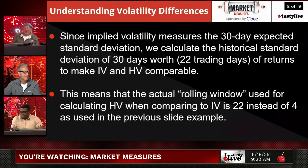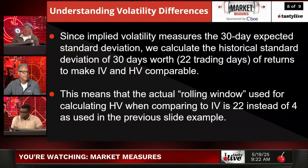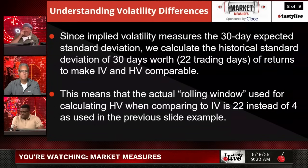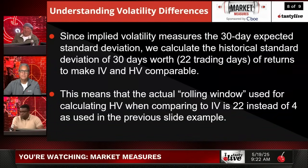Since implied volatility measures the 30-day expected standard deviation, we can calculate the historical standard deviation of 30 days worth — 22 trading days of returns — and make IV and HV comparable. This means the actual rolling window used for HV when comparing to IV is 22 instead of four as used in the previous example.